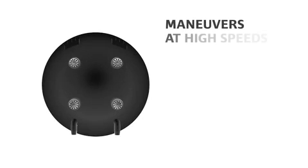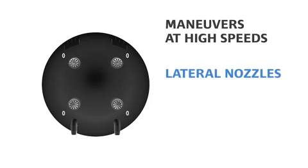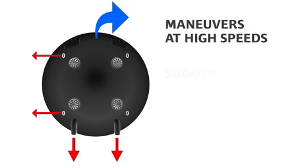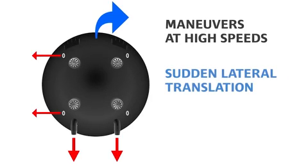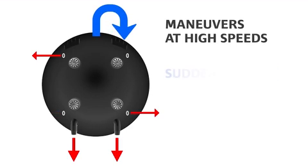To do special maneuvers at high speeds the aircraft can use lateral nozzles. So the aircraft can do sudden lateral translation or sudden yaw.